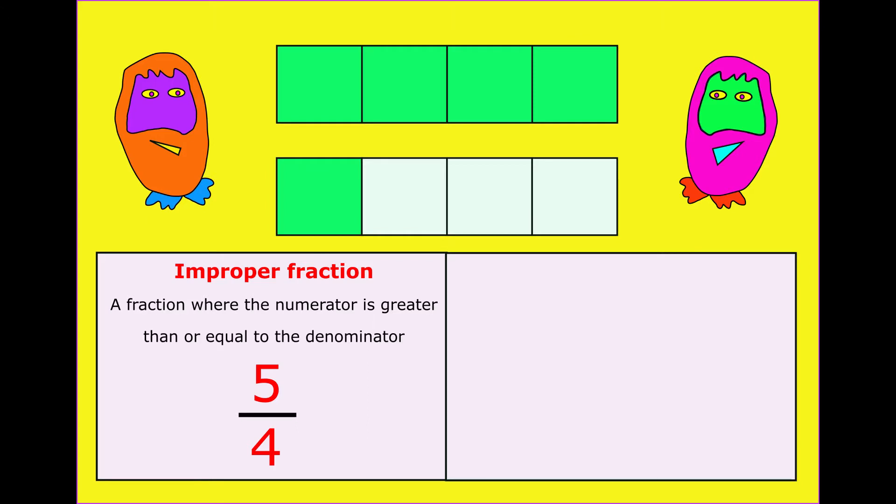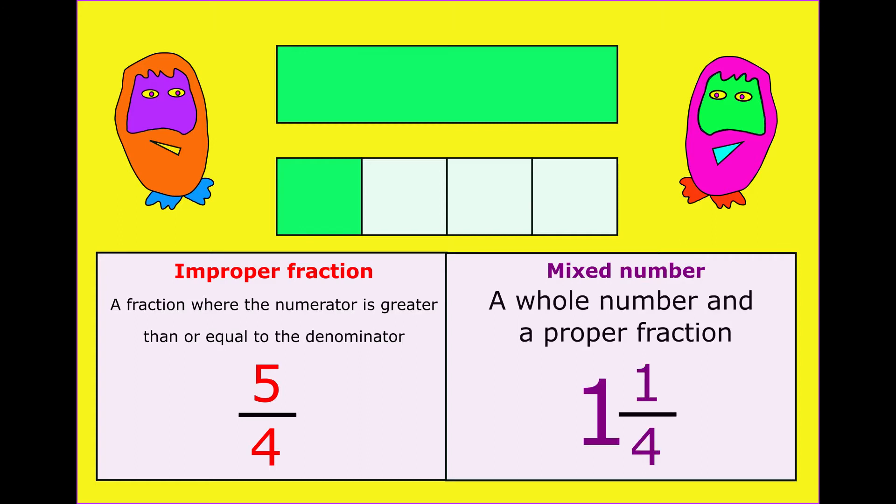Another thing we could do is say, well, four quarters is a whole. So here we have one whole and one quarter, and that is a mixed number. That's where you have a whole number and a proper fraction, such as one and one quarter.